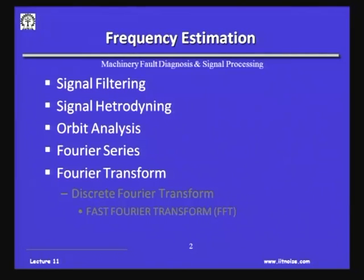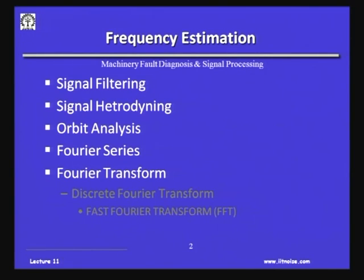To briefly review what we discussed in the past: even before FFT analysis was available, we could still estimate the frequency of a signal by signal filtering using analog filters — band pass filters, low pass filters. We will talk about octave and one-third octave filters later when we discuss audio signals. We also discussed signal heterodyning, where the beat phenomenon was used to find the frequency of an unknown signal given a reference signal. Then orbit analysis using Lissajous figures allows comparing frequency ratios of signals.